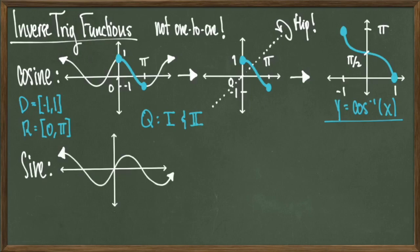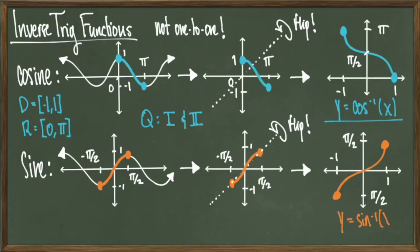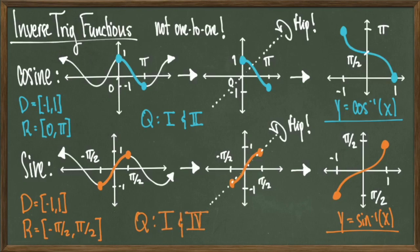To look at the sine inverse function, we'll do the same setup. Notice again that we do not have a 1-to-1 function, so we'll carve out the slice that sits between negative pi over 2 and positive pi over 2. We'll flip this around that same diagonal line to get our inverse sine function. This function has a domain of negative 1 to 1 and a range of negative pi over 2 to positive pi over 2, both closed intervals. It outputs angles in quadrants 1 and 4.